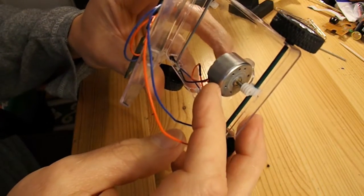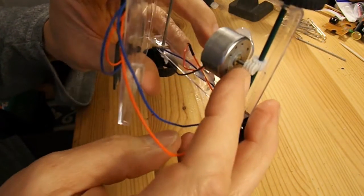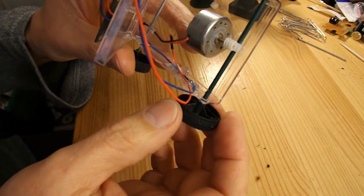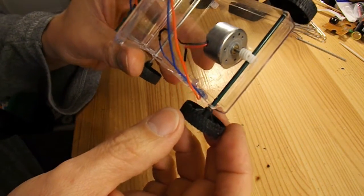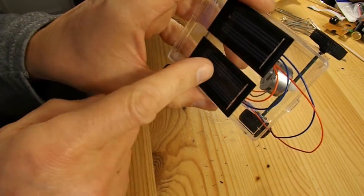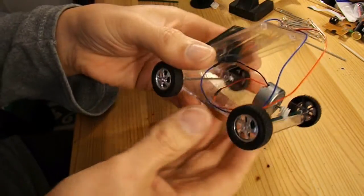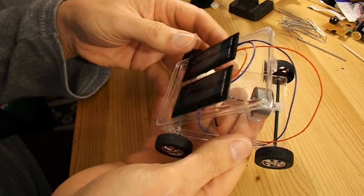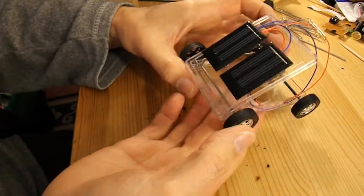So we've got the motor with the worm gear driving the back axle. I've extended the wires, and I've used both of those solar panels. There's even a bit of adjustment there for catching the sun.